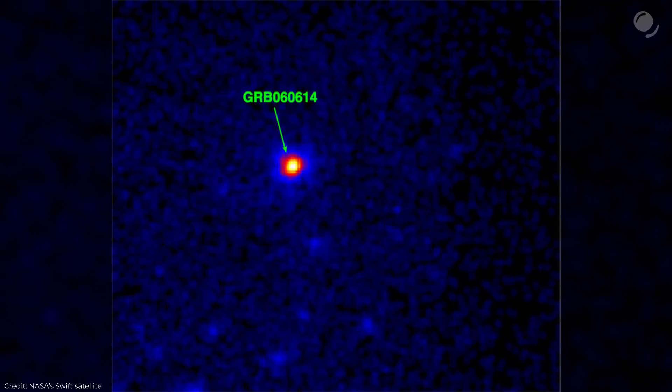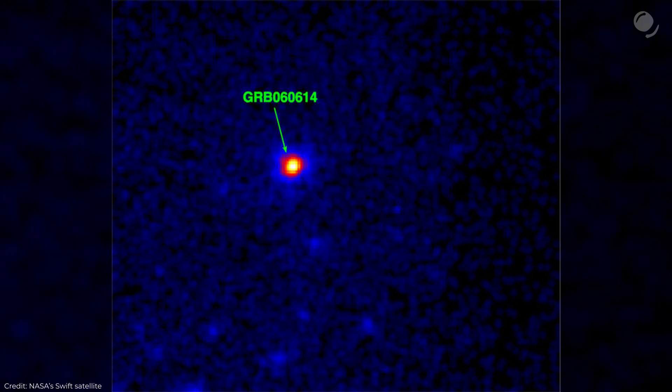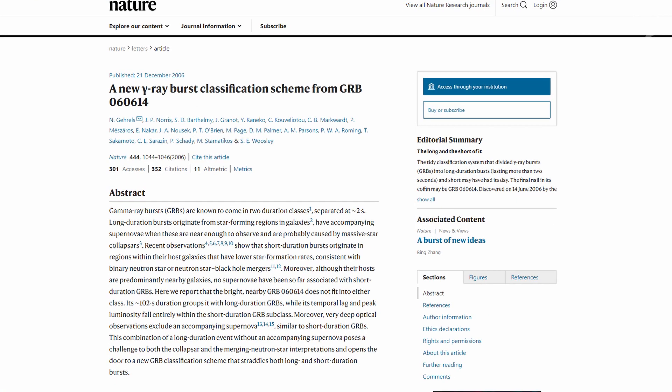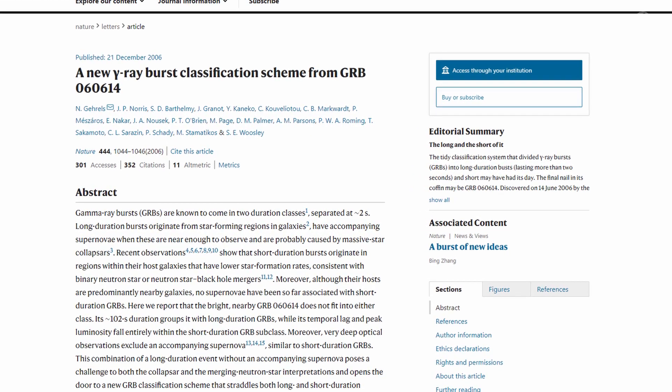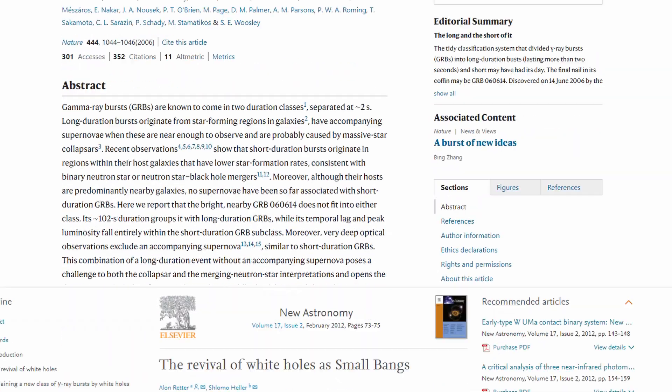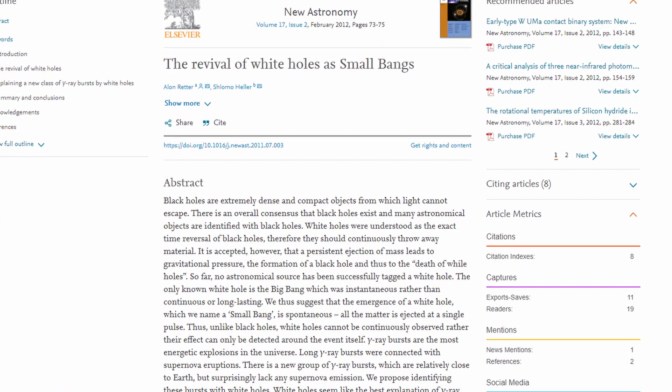But is there any observational evidence that can be interpreted in favor of existence of white holes? Not really. Some articles and even Wikipedia mentions one single event. It's a gamma-ray burst GRB 060614. It is anomalous because it had lasted much longer than other similar events and also it wasn't followed by a supernova. In this study it is stated that a combination of those two factors doesn't allow scientists to explain the event using a collapsing star or merging neutron stars. And this study in the journal New Astronomy attempts to link the event to a white hole.